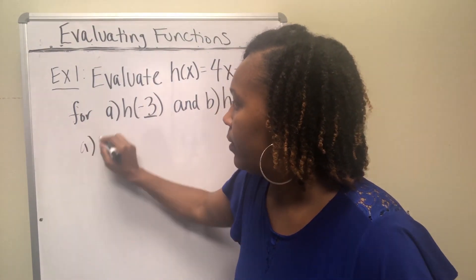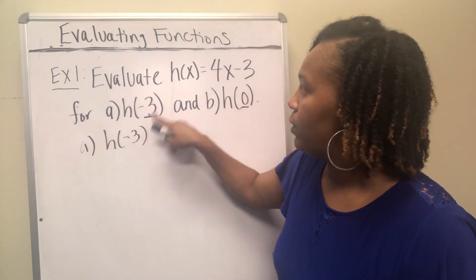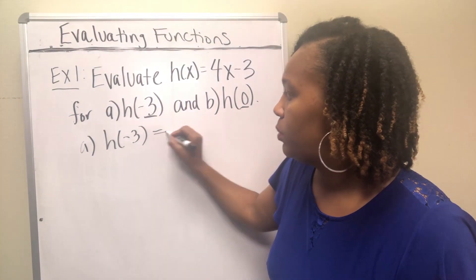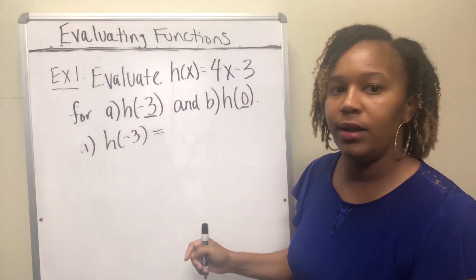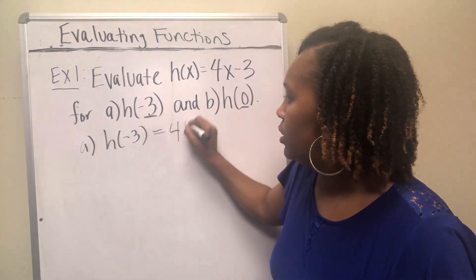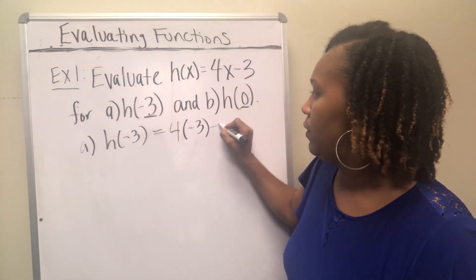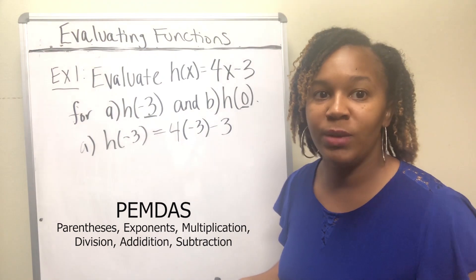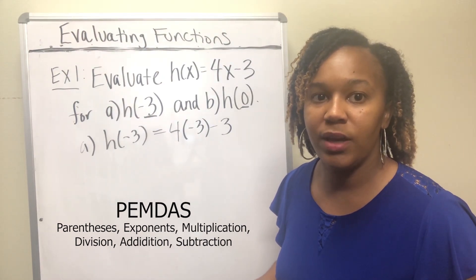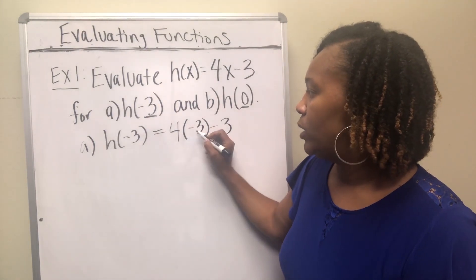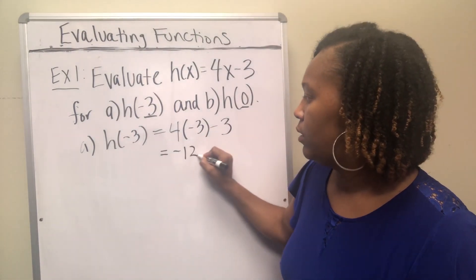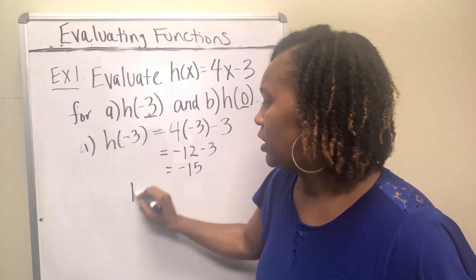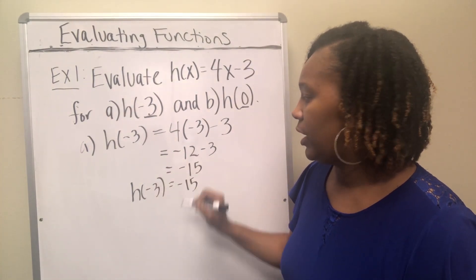For part A, notice that negative 3 is in the place of x. Wherever there was an x, there is now negative 3. Replace every x in the function with negative 3. So the expression becomes 4 times negative 3, minus 3. Using order of operations — Please Excuse My Dear Aunt Sally: parentheses, exponents, multiplication, division, addition, subtraction — 4 times negative 3 is negative 12. Negative 12 minus 3 is negative 15. So h of negative 3 equals negative 15.